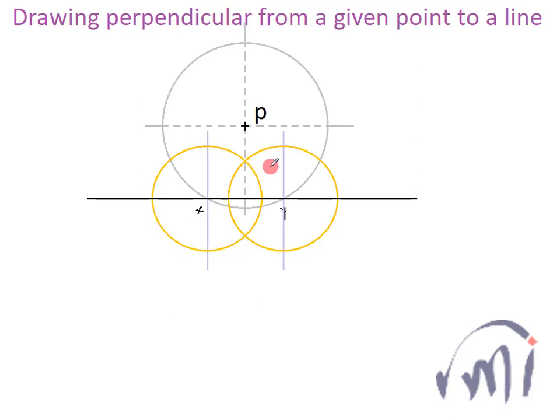So when you are drawing using compass, you need not to draw the complete circle. You can just cut one arc here and another arc here. You need not to draw the arcs over this side because after this I am actually going to join the point P with this point of intersection and we can extend it if you want and this line will actually be the perpendicular on the given original line.